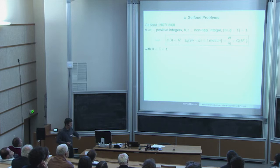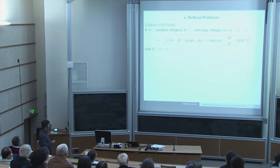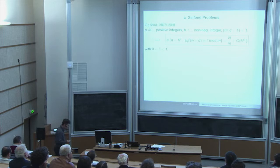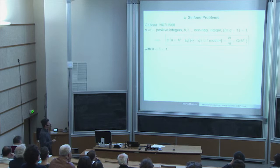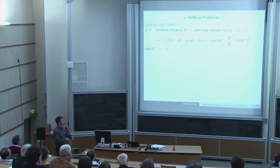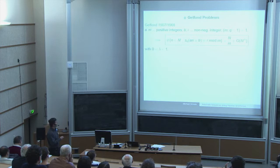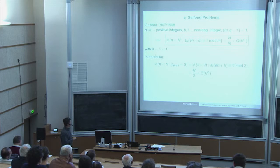Gelfond, in a paper in Acta Arithmetica, considered the sum of digits along a linear subsequence modulo m — for example, the Thue-Morse sequence along a linear subsequence. For binary and mod 2, he proved under mild conditions that you get a uniform distribution result: the sum of digits mod m along a linear subsequence is uniformly distributed on the set {0, ..., m-1}. This holds for all linear subsequences, and nowadays this is an exercise.